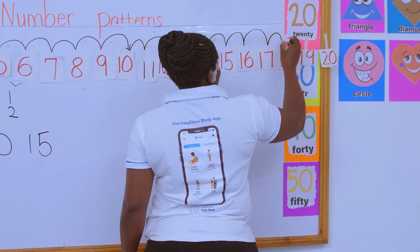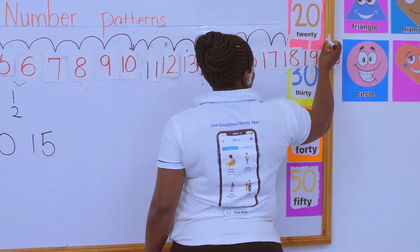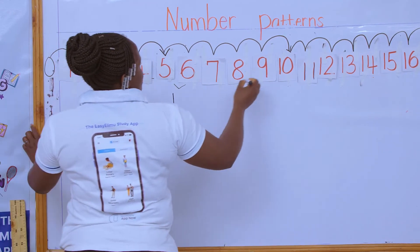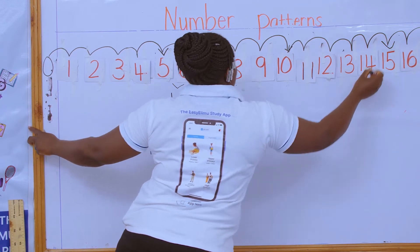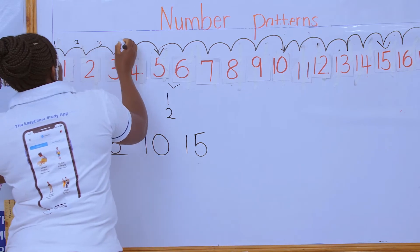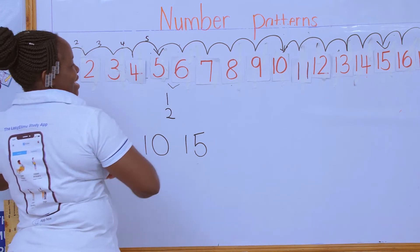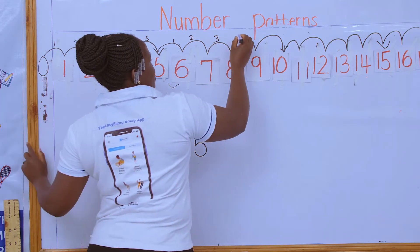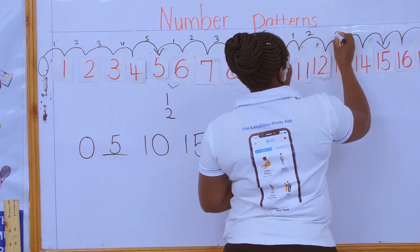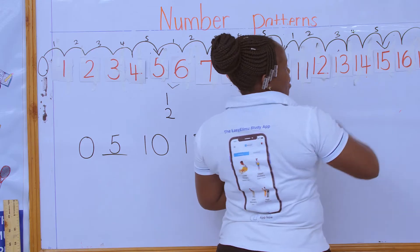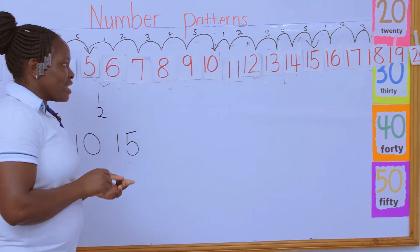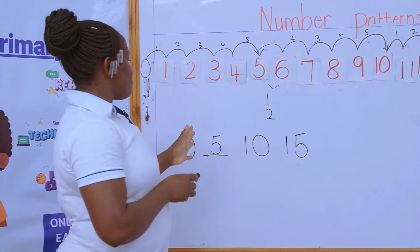Sixteen, seventeen, eighteen, nineteen, and twenty. So let's see our numbers: five was first, then the second, then the third. How many did we increase? We count one, two, three, four, five. Then another one, two, three, four, five. And again: one, two, three, four, five. You can realize that we are increasing our numbers by five each time.